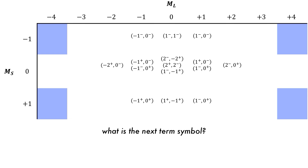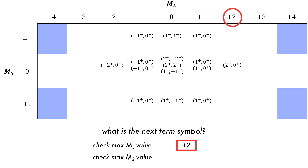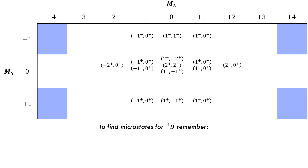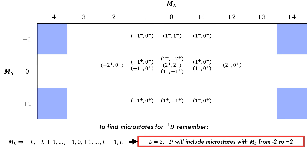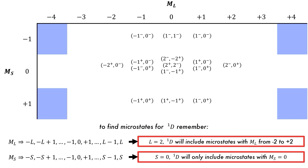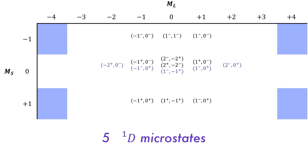What will be our next term symbol? Look at the table and find the maximum ML value remaining, which is +2. Then check the available MS values — for these ML values, we only have MS = 0, so we will have a singlet D atomic state. If L equals 2, then ML will range from -2 to +2: -2, -1, 0, +1, +2, giving 5 different ML values. Since MS only takes the value 0, the singlet D atomic state has 5 different microstates, only from the middle row where MS equals 0.